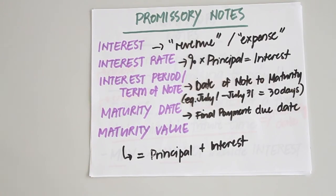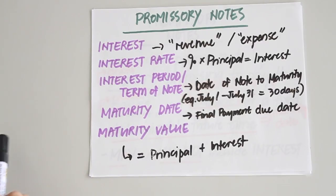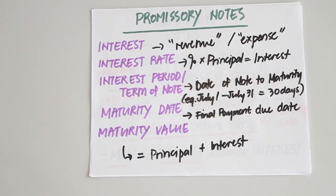The interest period, or term of the note, ranges from the date of note issuance until the maturity date. For example, if you issued a note on July 1 and it is due on July 31, the term of the note would be 30 days. The maturity date is the date on which final payment is due, while the maturity value equals the sum of the principal and the total interest of the promissory note.